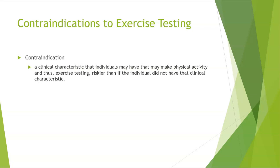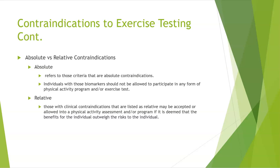Next, contraindications to exercise testing. A contraindication is a clinical characteristic that may make physical activity and exercise testing riskier than if the individual did not have that characteristic. We have absolute versus relative contraindications. Absolute contraindications mean individuals with those biomarkers should not participate in any form of physical activity or exercise test. Relative contraindications may be accepted if it is deemed that the benefits to the individual outweigh the risk.